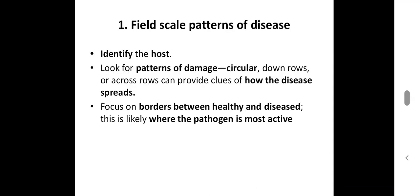First, field scale pattern of disease. In this case, identify the host — the plant on which the disease is occurring. Then look for the pattern of damage: whether the pattern is circular in the field, down rows, or across rows. This provides the idea of how the disease is spreading. Then determine where the pathogen is most active by focusing on the border between healthy and diseased plants.